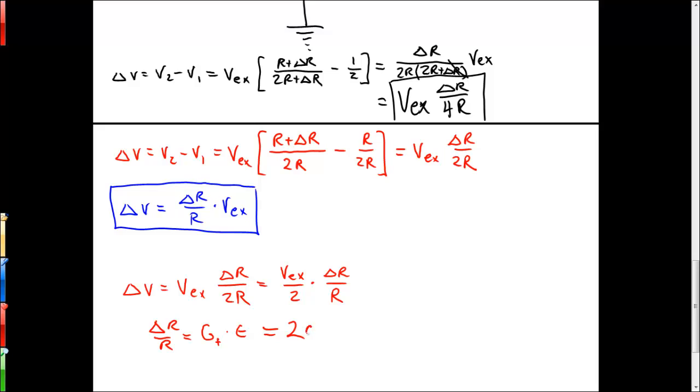And so we'll know that the change in resistance, the relative change in resistance, is equal to twice the strain. When this is the case, then we see that the change in voltage that we read across our terminals is equal to our excitation voltage over 2 times twice the strain, which is just going to be equal to the excitation voltage times the strain.